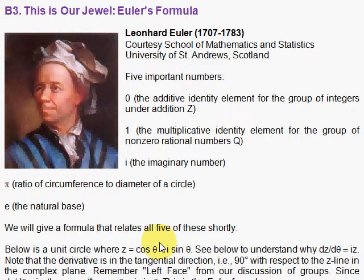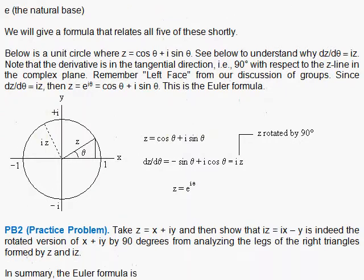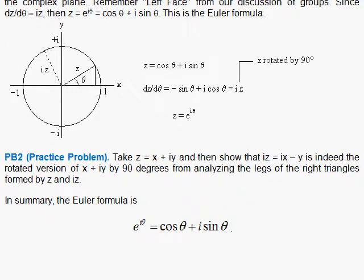But first we want to derive the Euler formula. And the way to derive the Euler formula, or one way to do it, is to consider the circle. And in this circle here, we have 1 along the x-axis marked off. We have plus i along the y-axis, so it's a complex plane. We have minus 1 and minus i.